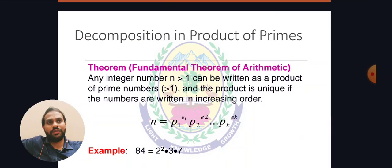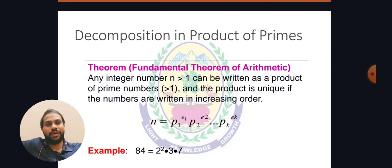The fundamental theorem of arithmetic deals with the decomposition of numbers into products of primes. It tells us that all numbers except primes — that is, composite numbers — can be expressed as a product of prime numbers. The statement says: any integer n greater than 1 can be written as a product of primes, and the product is unique if the primes are arranged in increasing order. All composite numbers can be expressed as a product of primes in increasing order, giving a unique pattern.